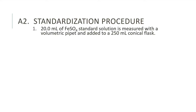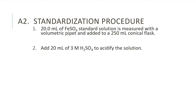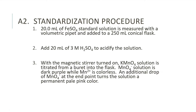A2: Standardization Procedure. To begin this experiment, measure 20 mL of the iron sulfate standard solution with a volumetric pipette and add it to a 250 mL conical flask. Then add 20 mL of 3 molar sulfuric acid to acidify the solution. Start the titration by adding the potassium permanganate solution from the burette into the flask with the magnetic stirrer on. Permanganate solution is dark purple while manganese 2+ is colorless. An additional drop of permanganate at the endpoint turns the solution a permanent pale pink color. Record the initial and final volume of the titrant for calculations.